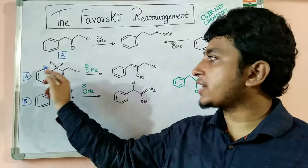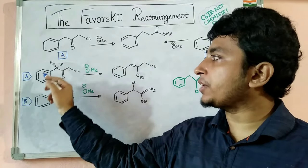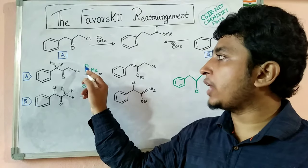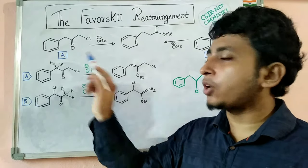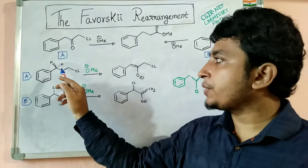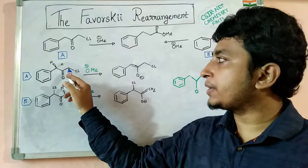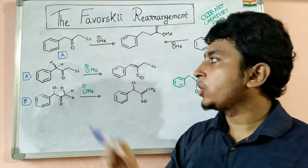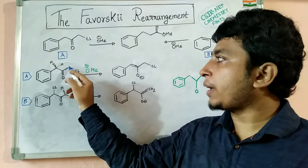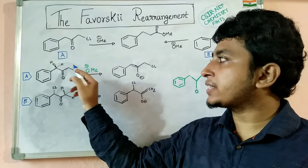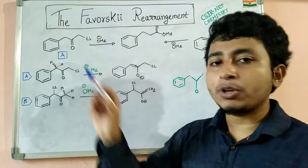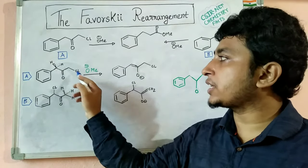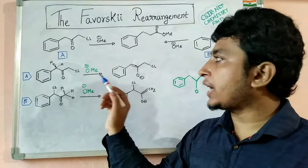This is the structure of compound A, and compound A is treated with the base OMe⁻. This base will abstract the proton which will be acidic. You can see this carbon and that carbon can contain the acidic proton because these carbons are adjacent to the ketone. If this proton is abstracted by the base, the negative charge will come on this carbon.